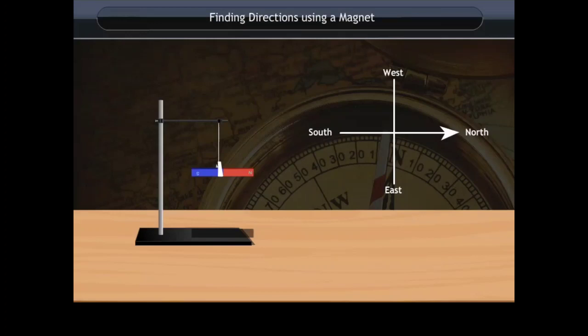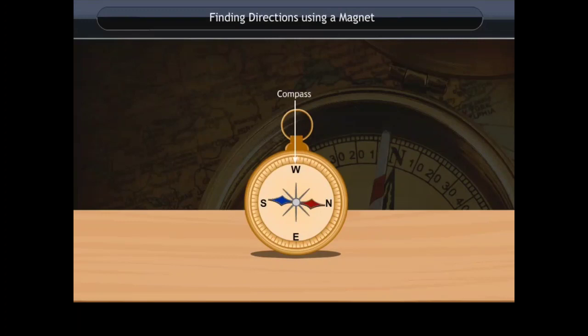The freely suspended magnet always rests in north-south direction. It is because the north pole of the magnet points towards the north and south pole points towards the south direction. A line drawn perpendicular to the north-south line shows east to the right and west to the left of the north-south line. A magnetic compass shows directions based on the same principle.